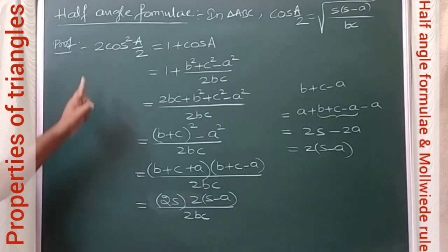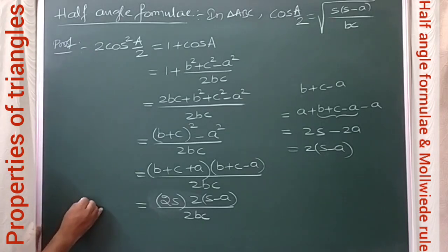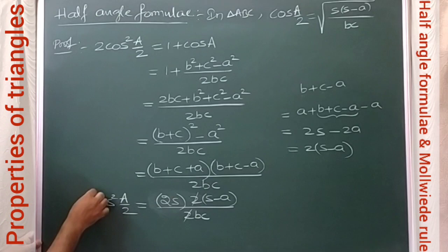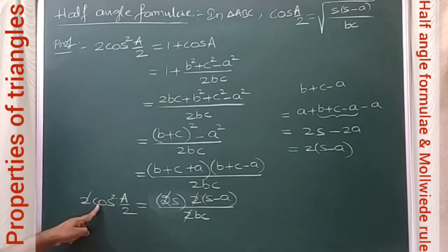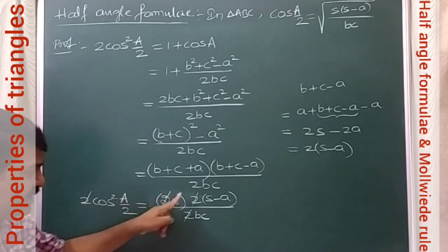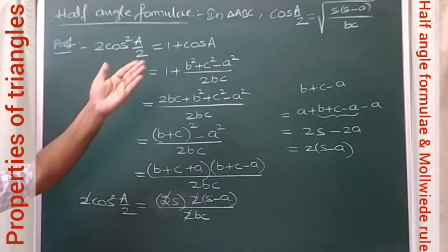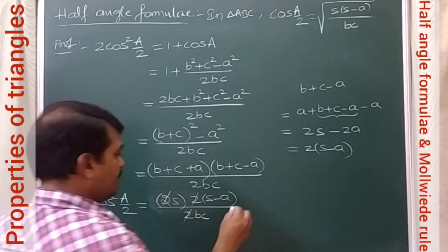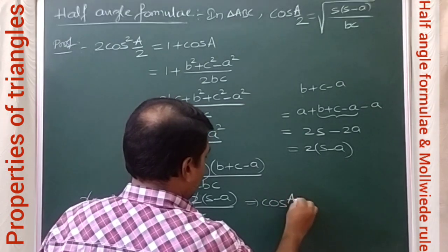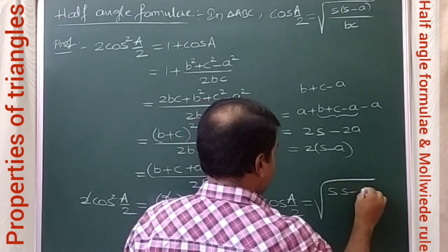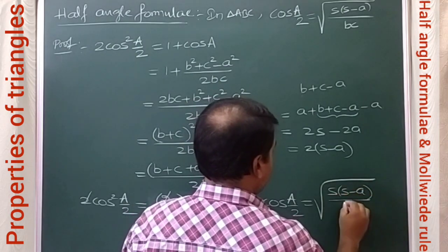Cancelling the 2s on both sides gives cos²(A/2) = s(s − a) / bc, and therefore cos(A/2) = √[s(s − a) / bc]. This is the derived formula for cos(A/2).